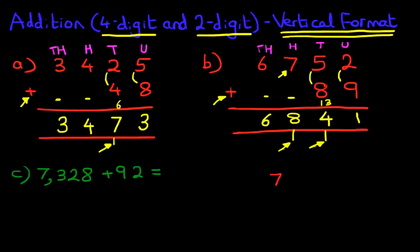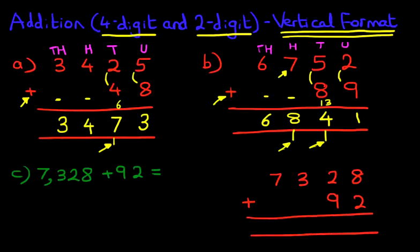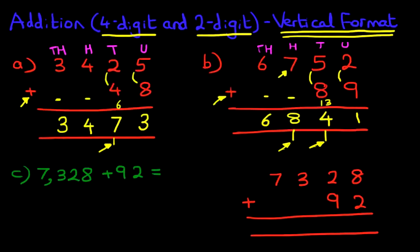We've got 7. Write it out in nice, neat columns. The 92 has to go over here. Make sure the numbers are on top of each other, so it makes it easier to work out the addition. Oops, sorry about that.